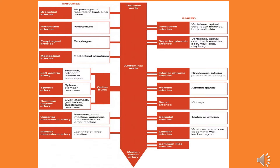The superior mesenteric artery supplies the pancreas, small intestine, appendix, and first two thirds of the large intestine. The inferior mesenteric artery supplies the last third of the large intestine. The abdominal aorta also gives the inferior medial sacral artery.